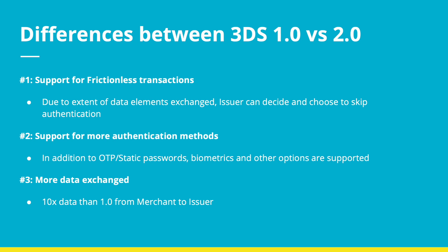The last and the most important one — how is the issuer able to support the frictionless transactions — is purely because of the amount of data that is passed on between the 3DS requester app and the issuer which enables the issuer to take this decision.